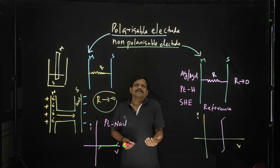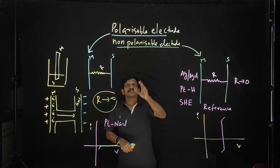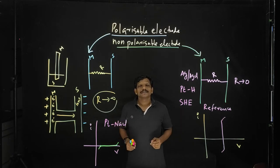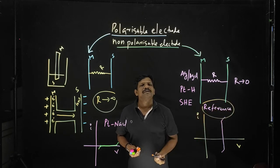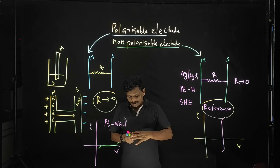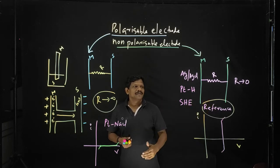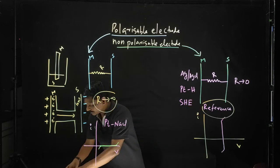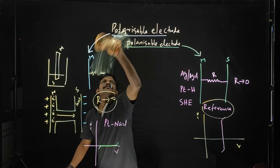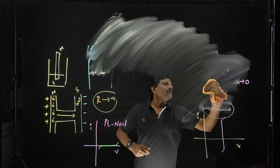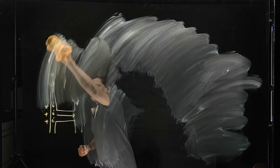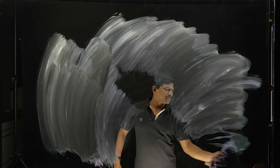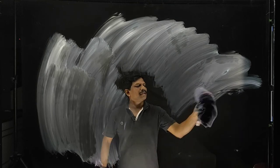This is a very basic thing when you are talking about electrodes. The first thing you have to study is the difference between a polarizable electrode and a non-polarizable electrode. You have to read about this because you will have to study different types of electrodes, and that will make it easy.